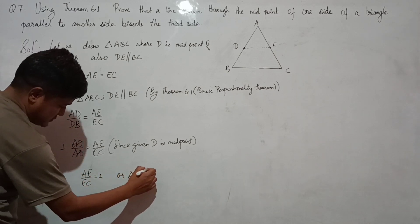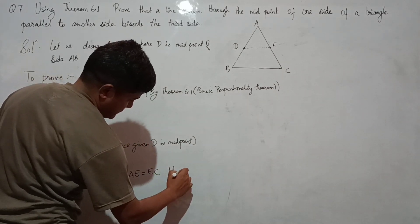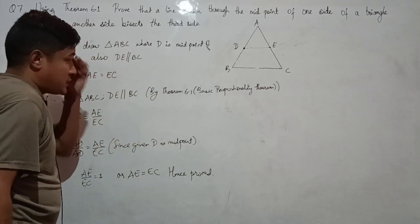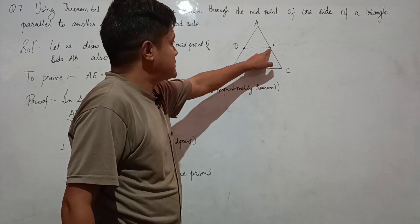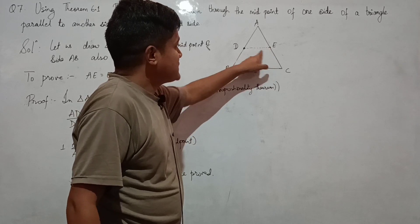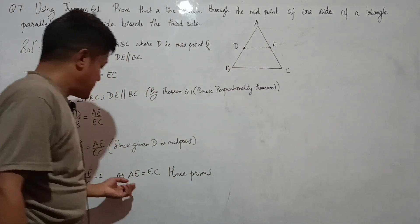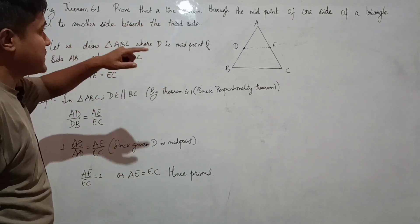Therefore AE by EC equals to one, or AE equals to EC. Hence proved. So you have a midpoint, you have a line parallel, and the third side is bisected.